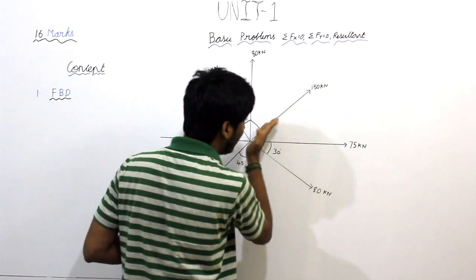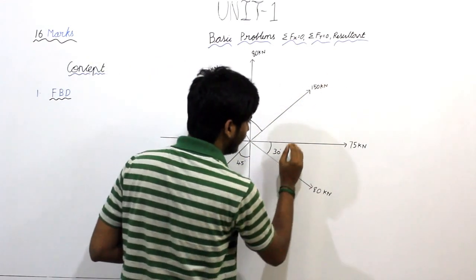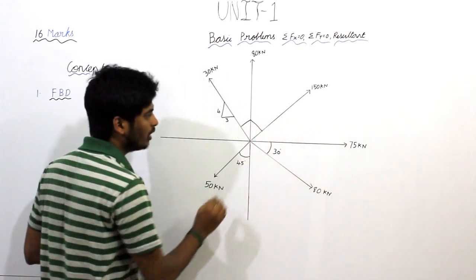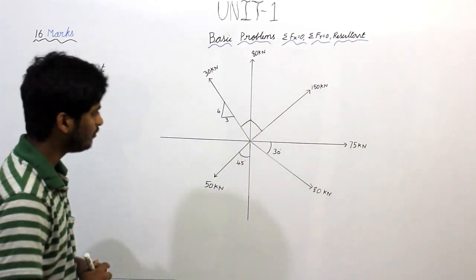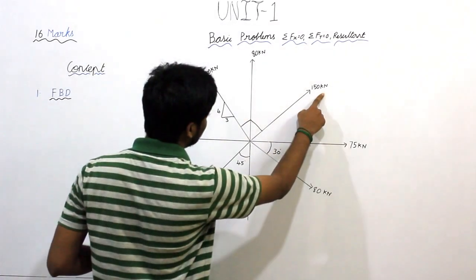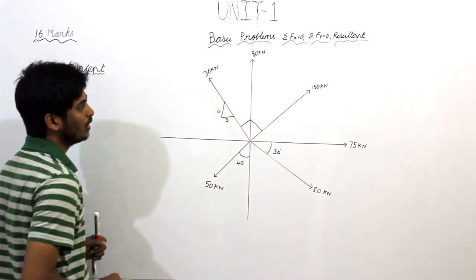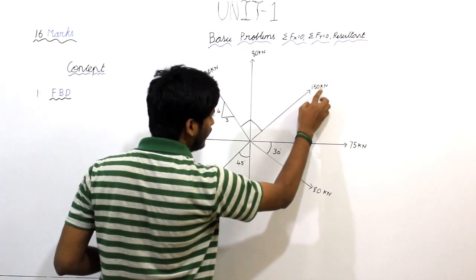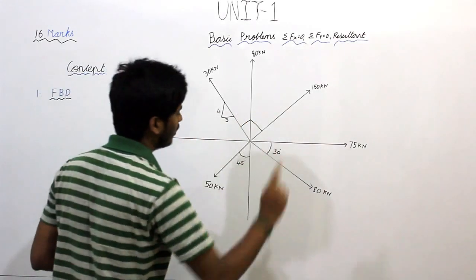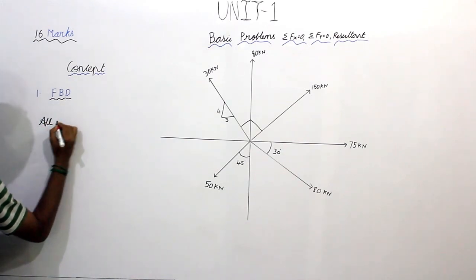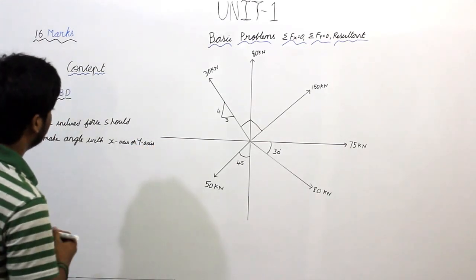The first rule: what is an inclined force? It should make an angle with the x-axis or y-axis. So, in the first coordinate, 150 kN is not making an angle with either the x-axis or y-axis. That is the first point — all inclined forces. This is the first step.